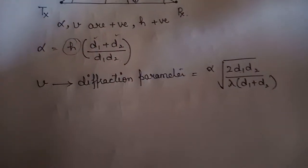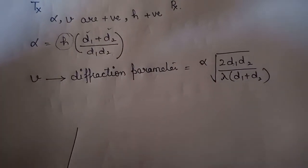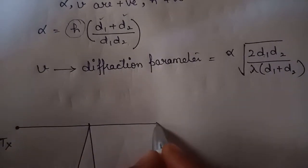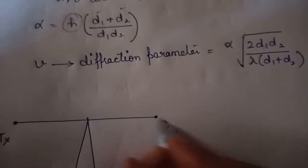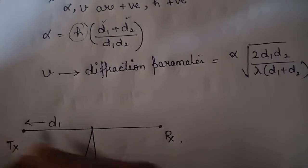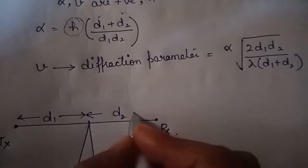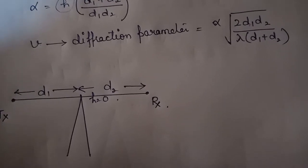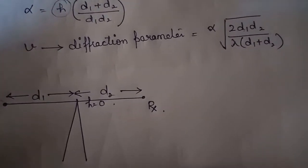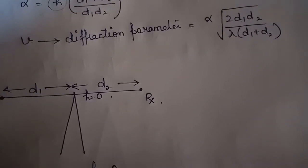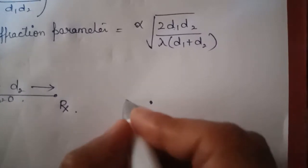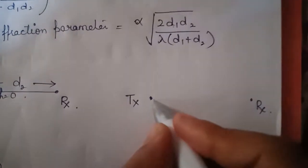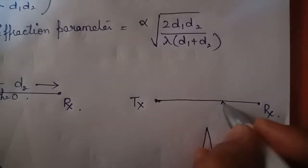The second case is when the obstacle height is almost equal to the height of your transmitter and receiver — this is the line-of-sight case. In this case, h equals 0, so alpha and v are also equal to 0. The third case is when the transmitter and receiver height is greater than the obstacle height. In this case, h will be negative.